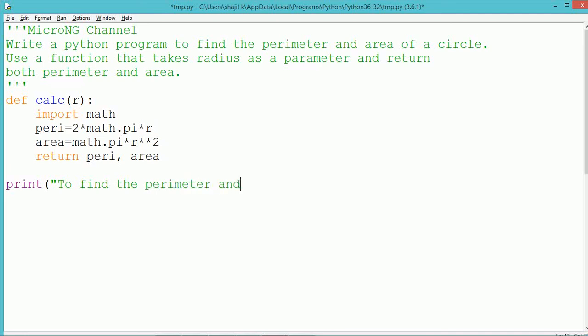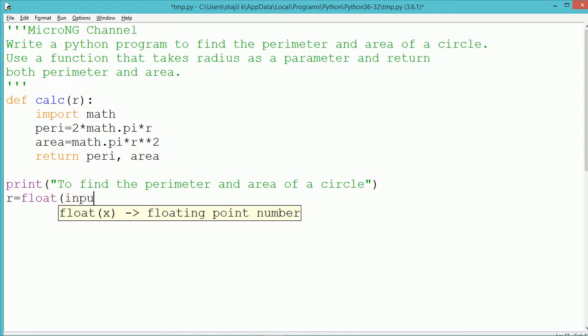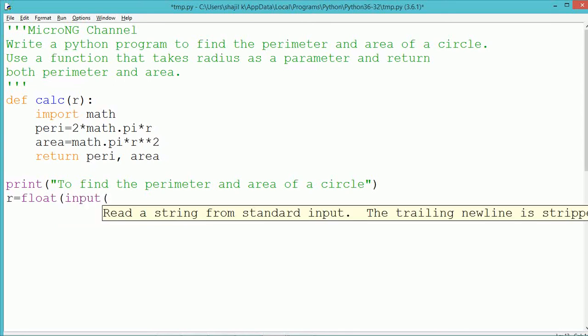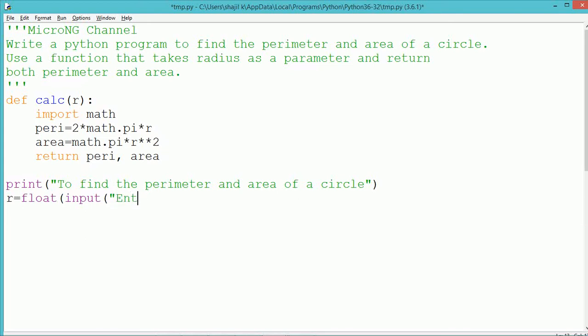In the main module, to accept the value of the radius, we use an input method. The value read from the user will be converted into float. The floating-point value is represented for the radius of the circle.